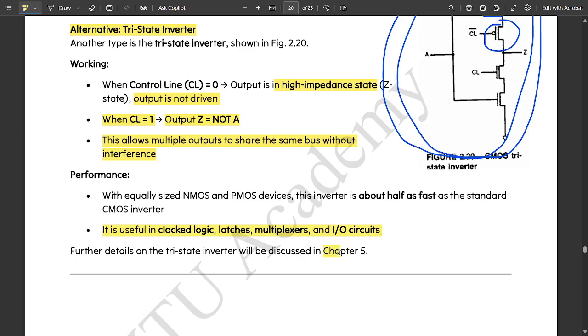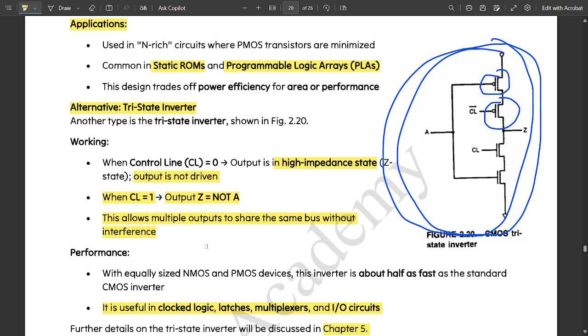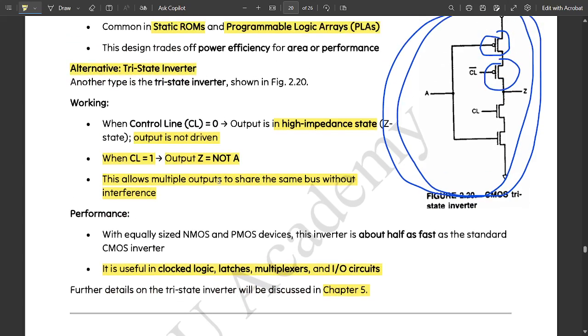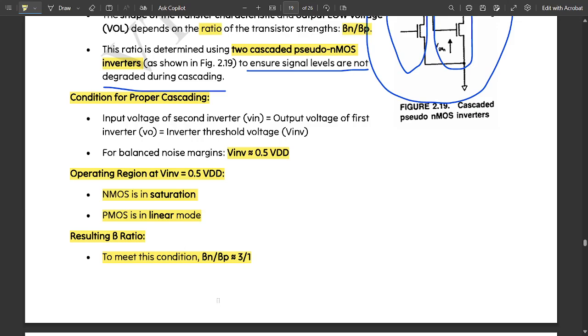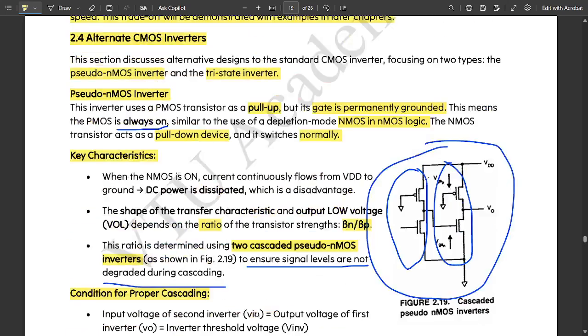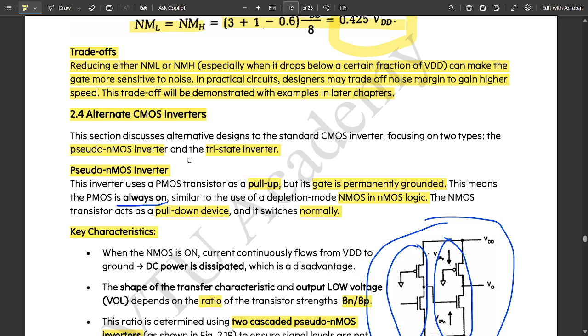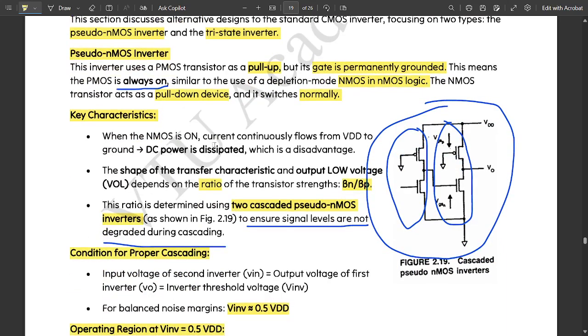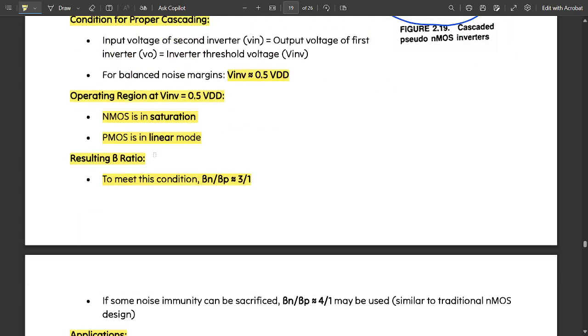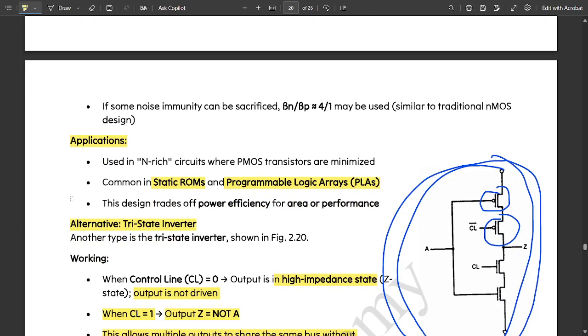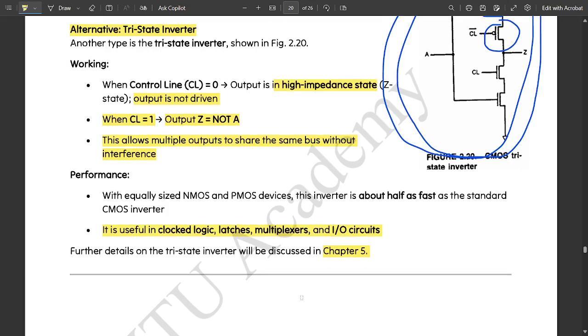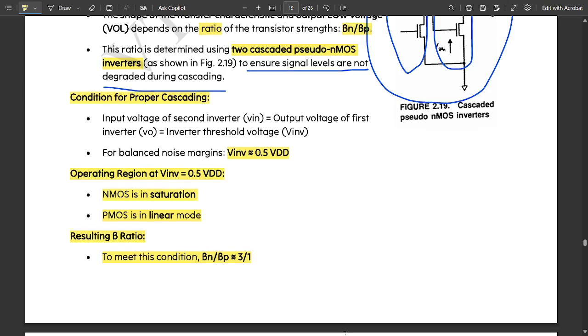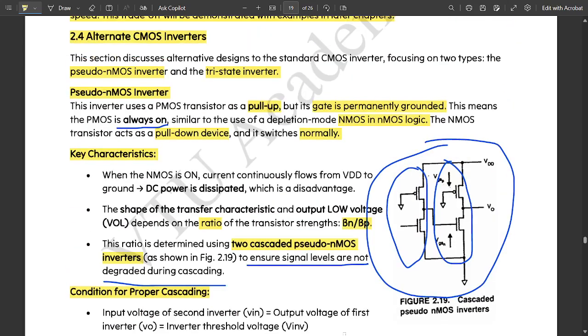These are some basic points from this second module which you need to know for the tri-state inverter which comes under alternate CMOS inverters. We have discussed both kinds of inverters: pseudo-nMOS inverter, its characteristics, applications, definitions with respect to cascaded form, its operating regions resulting in beta ratio, and some applications. And the tri-state inverter, the circuit, working, and performance—everything we have discussed in this video.